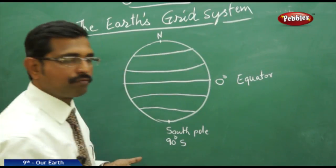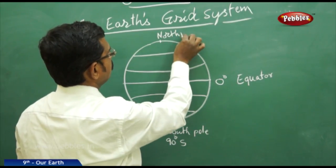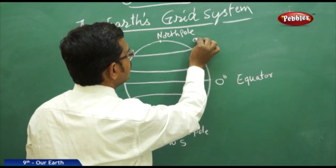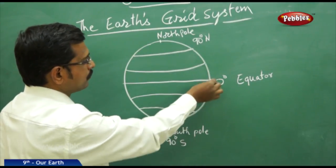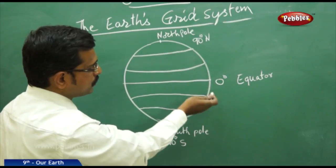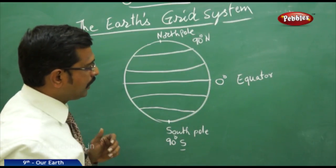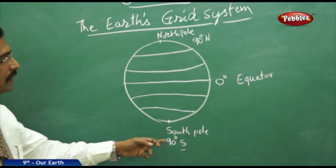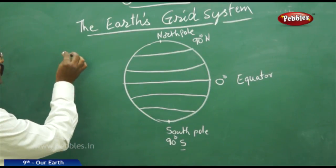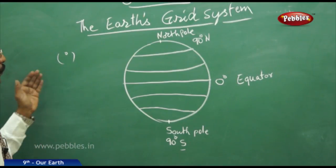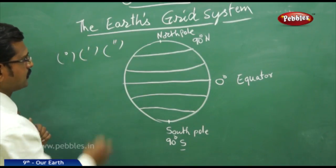90 degrees south is the south pole, and the north pole is at 90 degrees north. At the poles, the latitude is just a point, not a line. From 0 to 90 degrees, you have northern hemisphere latitudes, and 0 to 90 degrees south for the southern hemisphere latitudes, denoted with the symbol S and the degree symbol.